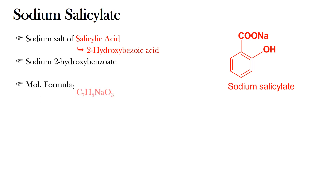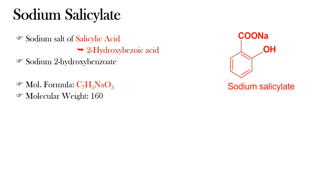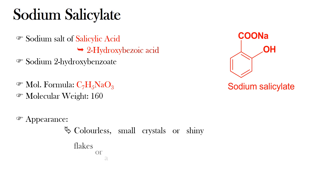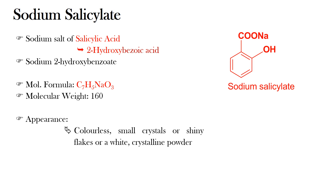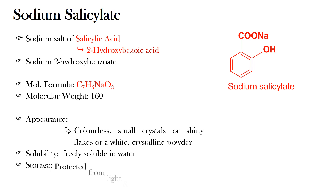Its molecular formula is C7H5NaO3 and its molecular weight is 160. Sodium salicylate appears as colorless small crystals, shiny flakes, or a white crystalline powder. It is freely soluble in water and should be stored protected from light and moisture.